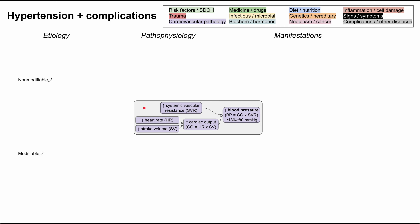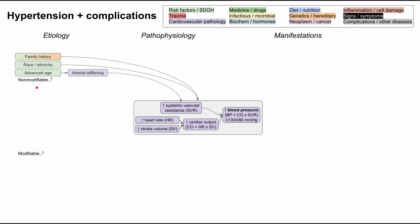Let's think about etiologies, broken down into modifiable and non-modifiable. For non-modifiable etiologies: a family history of hypertension predisposes you through multiple mechanisms. Certain races and ethnicities are predisposed, which is multifactorial and a major social determinant of health. Advanced age can predispose you to hypertension, usually through arterial stiffening — stiff arteries make it difficult to pump blood through the vascular system, increasing systemic vascular resistance.